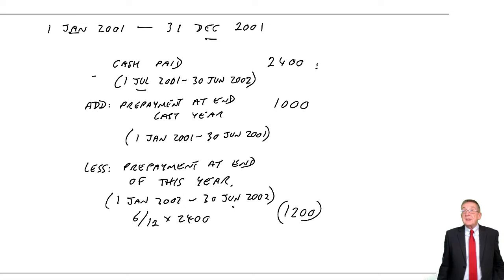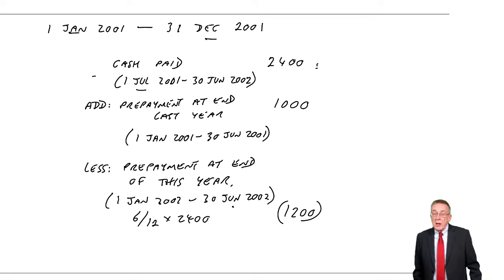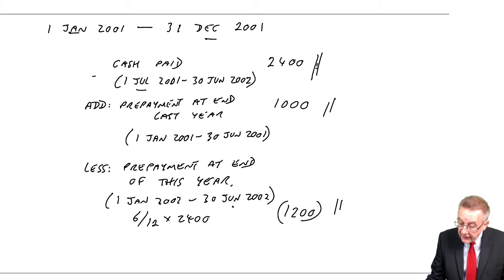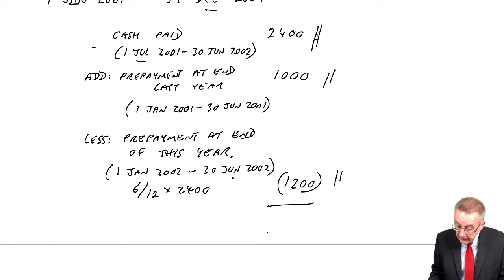If it's overpaid, to get this year's expense we need to remove it. We've prepaid six months—it's out of that $2,400, which is a 12-month bill. Six-twelfths of $2,400 is $1,200. So think about what I've done. I took the cash paid, I'm taking out what bit of that is overpaid, which bit is next year, and I'm adding on the bit we'd already paid for part of this year.